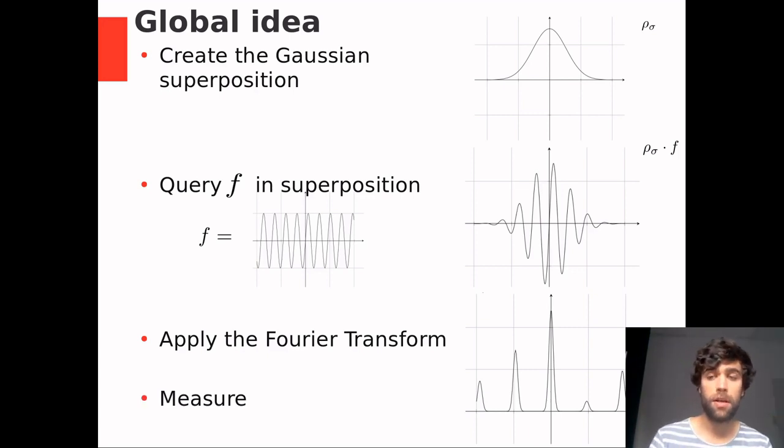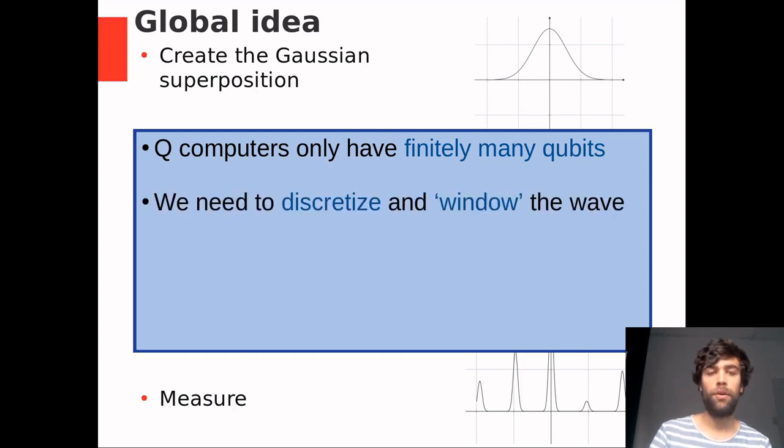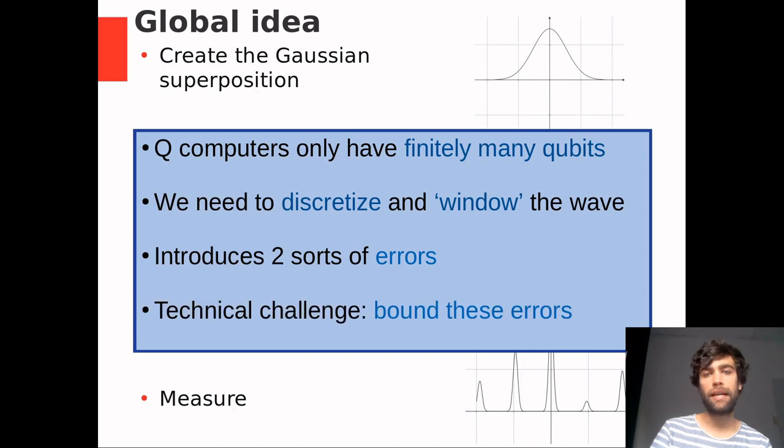We know that this particular algorithm with an infinite number of qubits would work. But the problem is that quantum computers as we know them only have finitely many qubits. Therefore, we need to discretize and window the quantum waves involved. And this leads to two kinds of errors. And the technical challenge is to explicitly bound these errors.